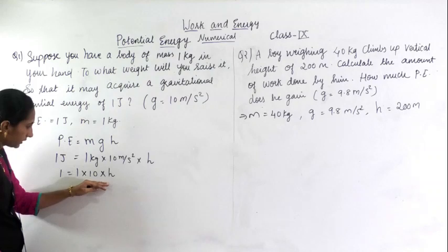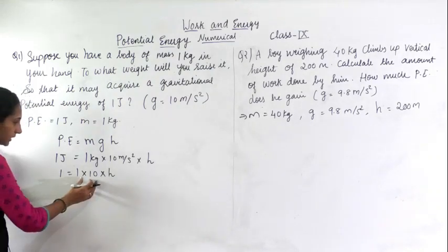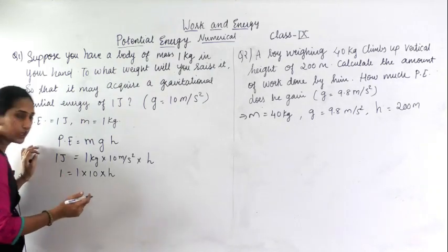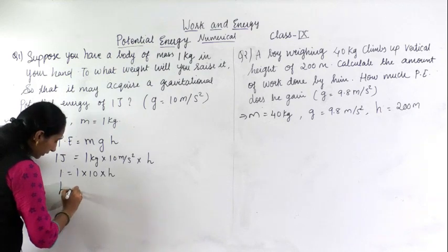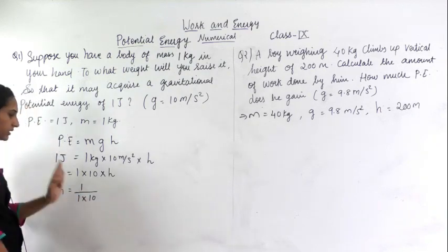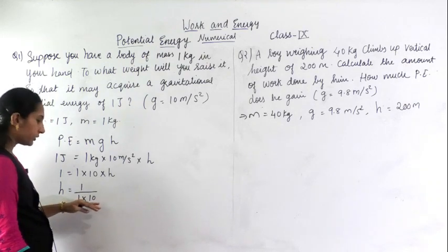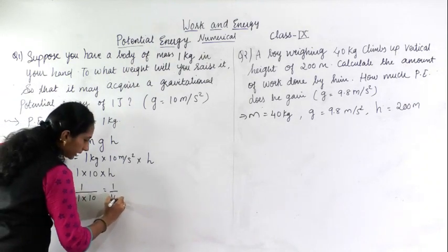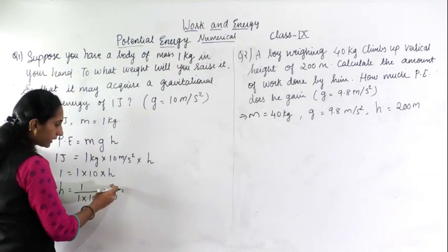See here you have to find height, so these two factors will come here as it is multiplied, it will come here and become divided. So h equals 1 divided by 1 into 10 as it is taken. 1 divided by 1 into 10 means 10, that is 1 divided by 10. As it is divided by 10, the decimal point will be shifted over here.